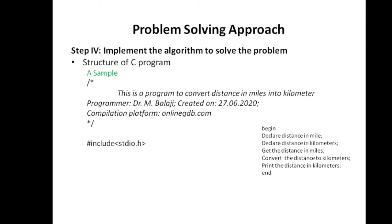Next we have the preprocessor directive: hash include stdio.h. We already discussed that this gives information about input/output functions to the program. Then our main function starts. We declare the main function as an integer function — int main(void). Here, void means nothing, meaning this function is going to return a zero value to the operating system. The main function will return an integer value, which is zero.